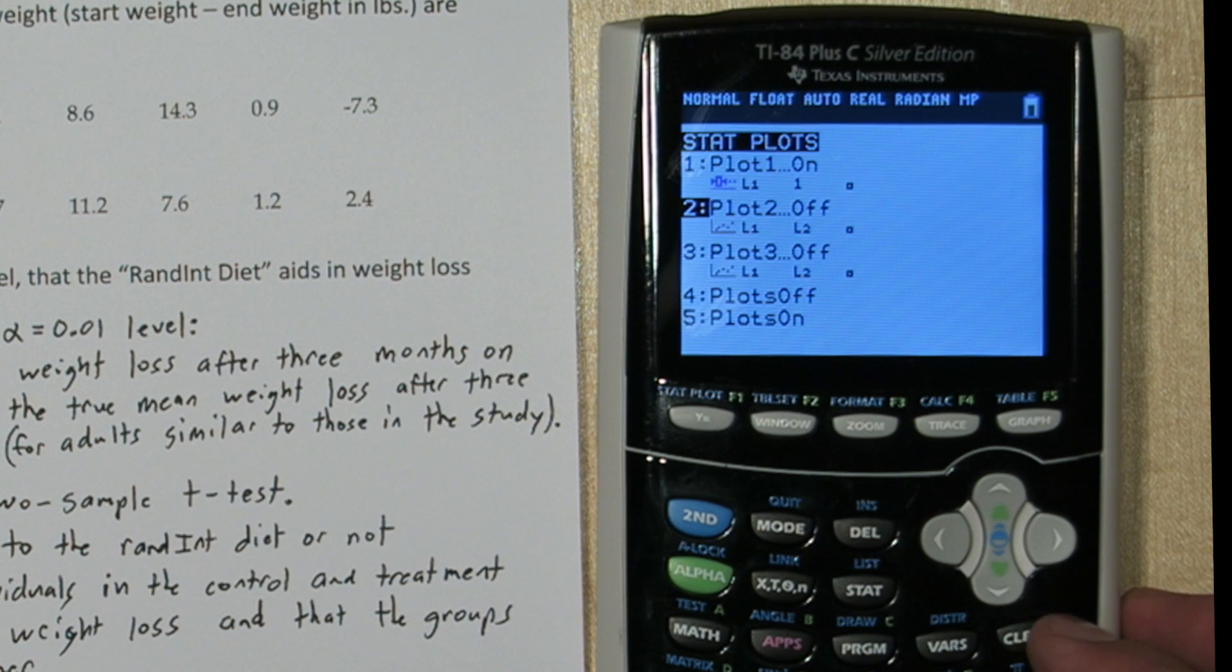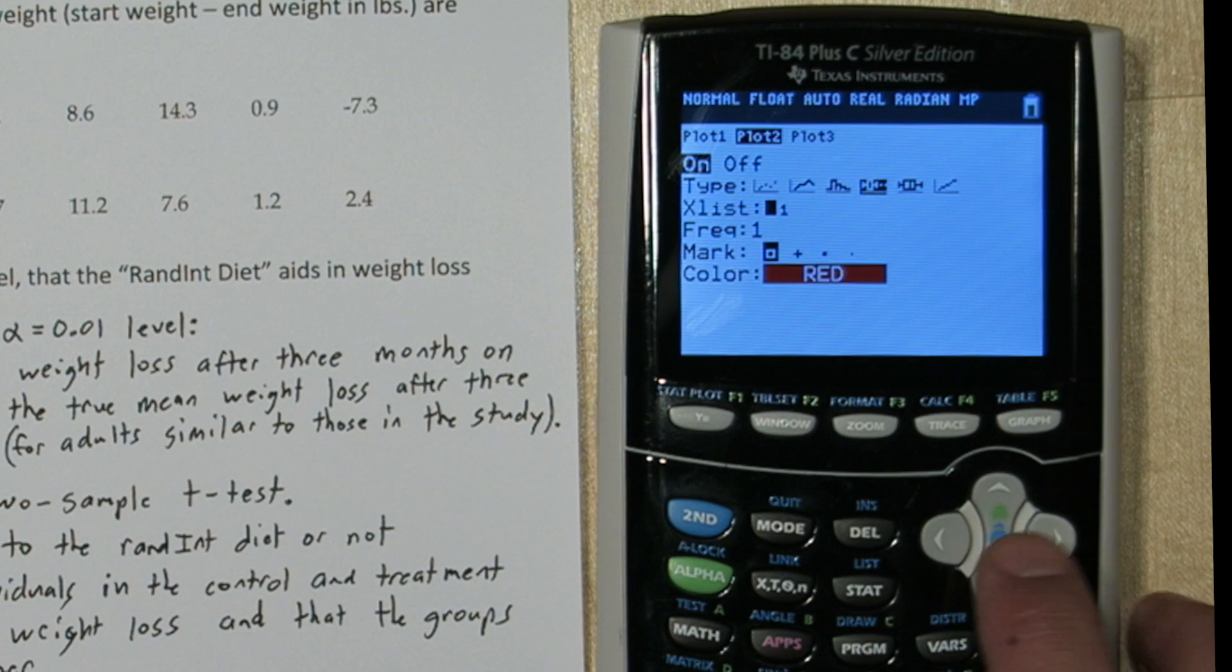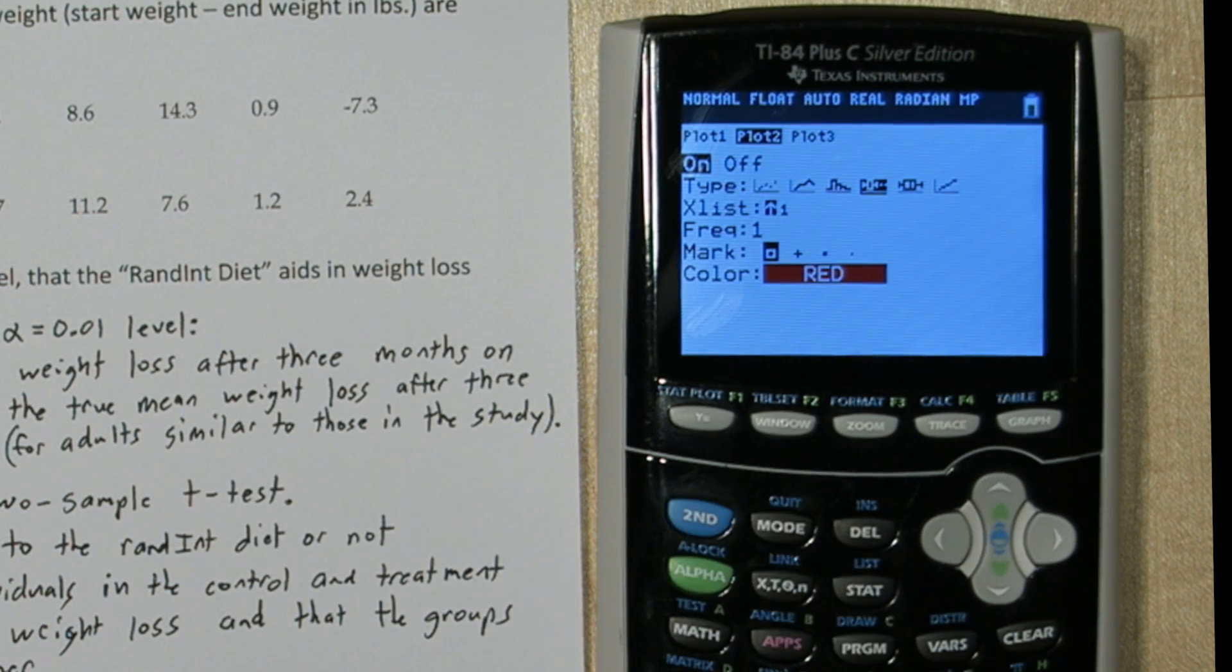Press 2nd and y equals again, and turn on plot 2. And change that to a modified box plot. But where it says xlist, we're going to say list 2. So it graphs the treatment group's data.